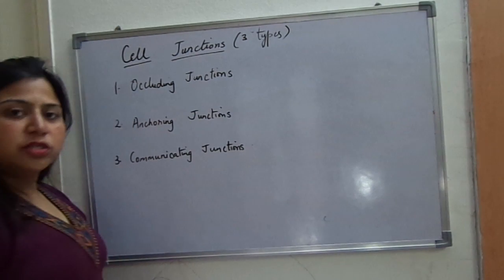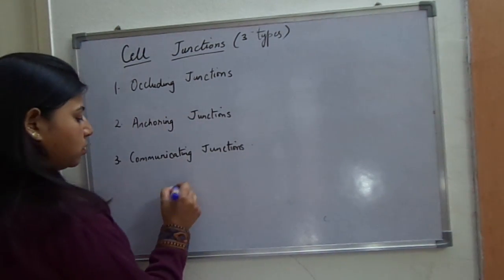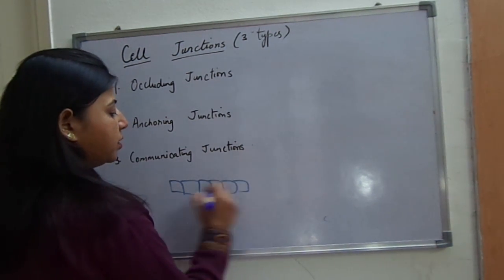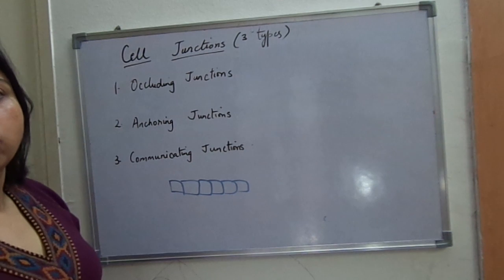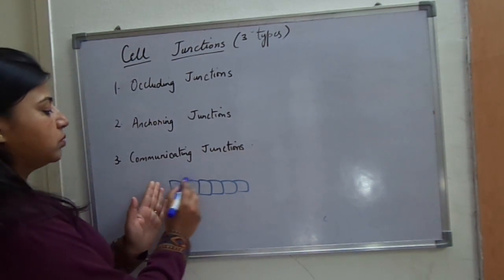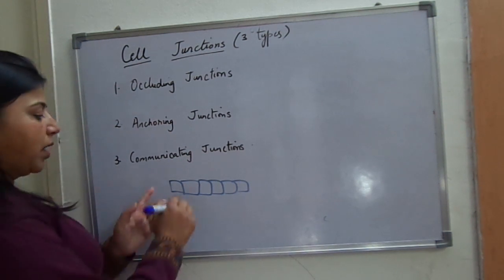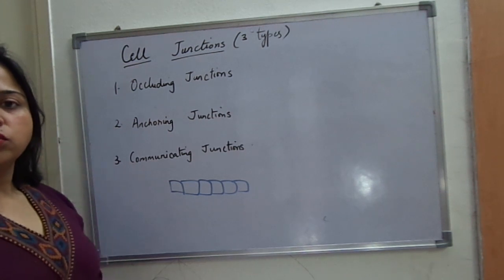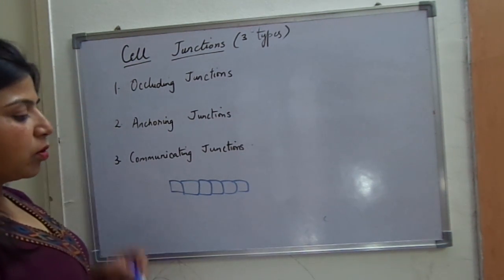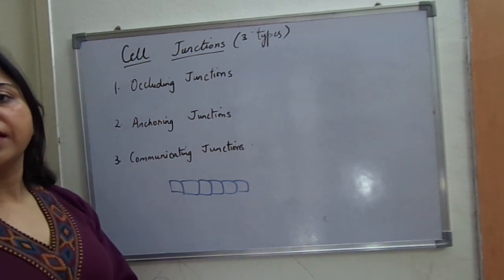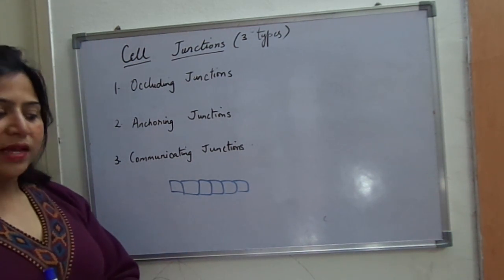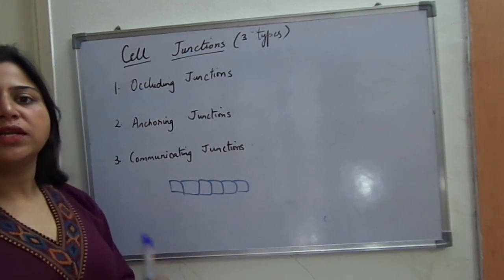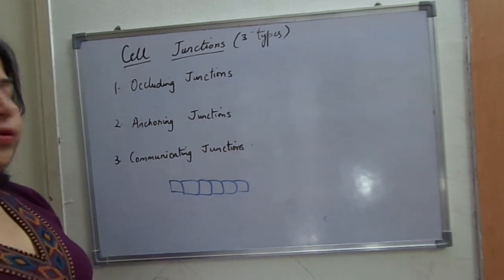In vertebrates, all tissues — tissue means when two cells are bound to each other — they form a tissue, and we all are multicellular organisms. Multicellular organisms need to maintain their multicellularity by binding their cells together. So in vertebrates, and certain plants also, tissues are attached to each other with the help of cell junctions.